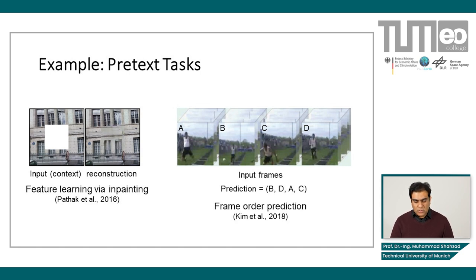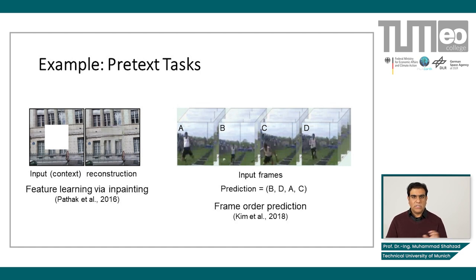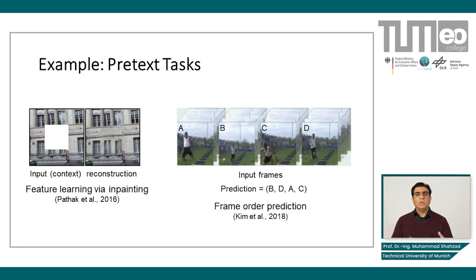There's also one more pretext task — frame order prediction — where you randomly shuffle sequential frames and try to predict the correct order. This is another useful pretext task application.